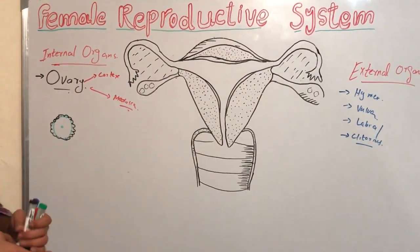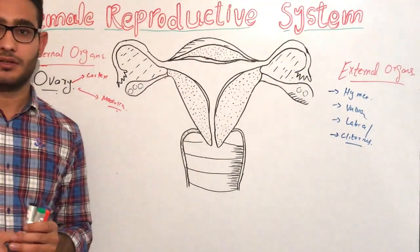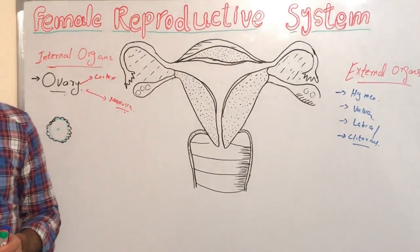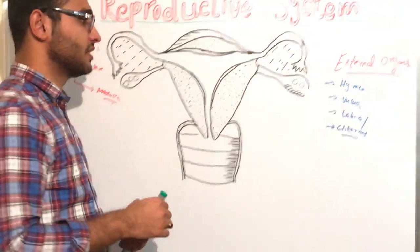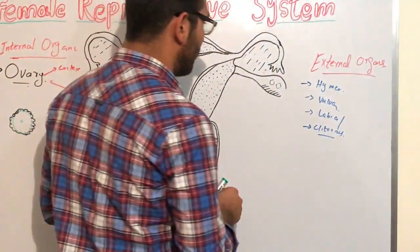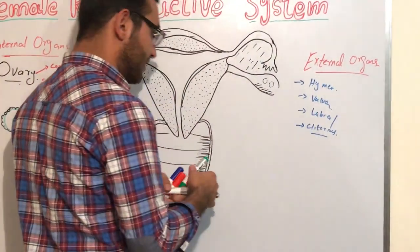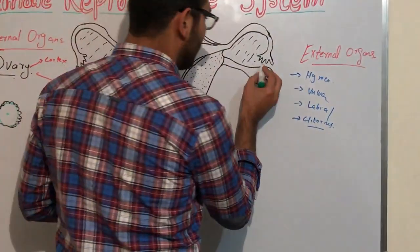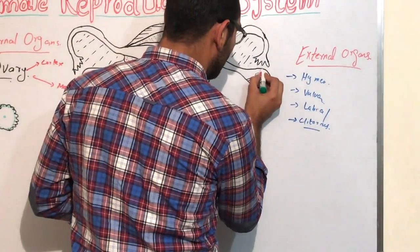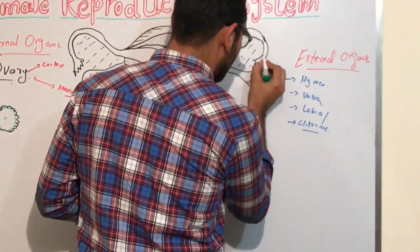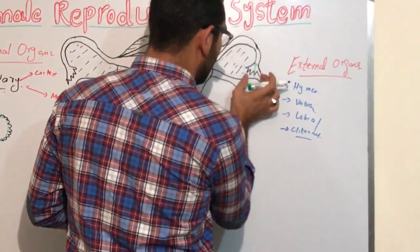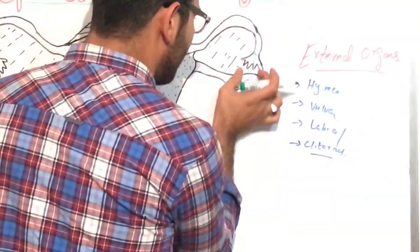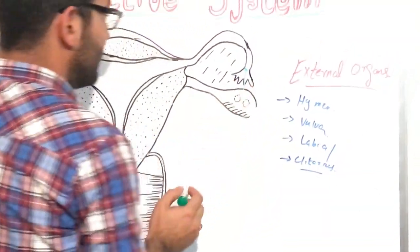When puberty occurs, then the ovum is produced. When the ovum is produced, it will enter into the fallopian tube.